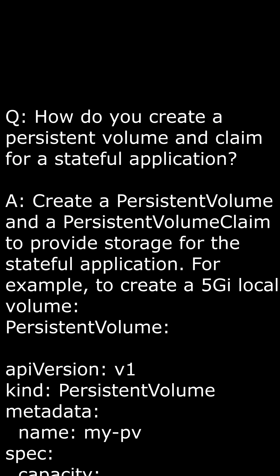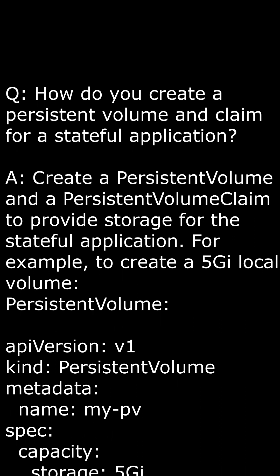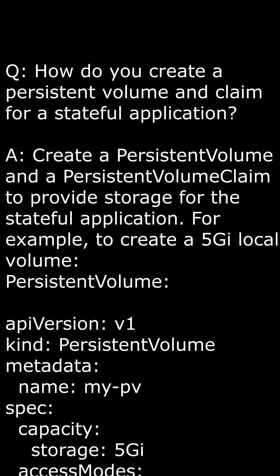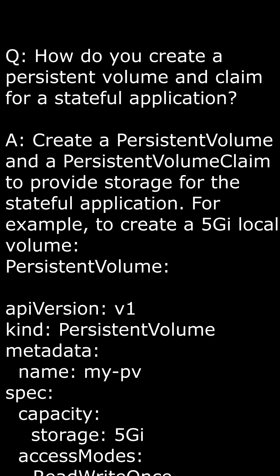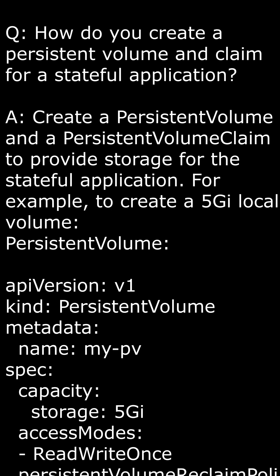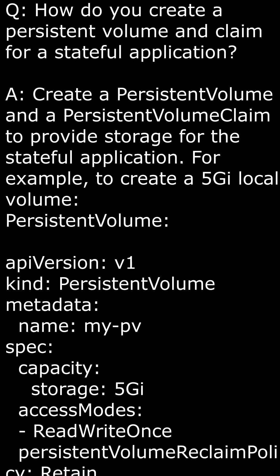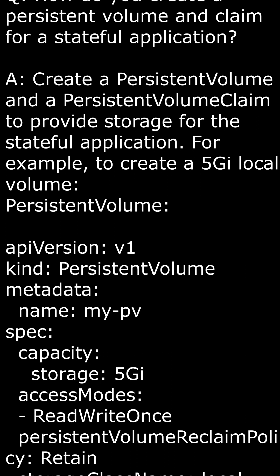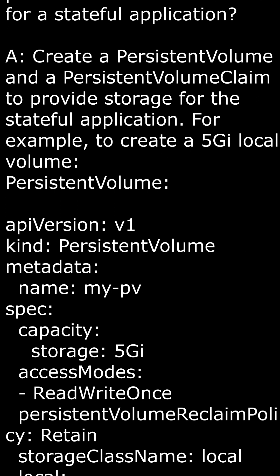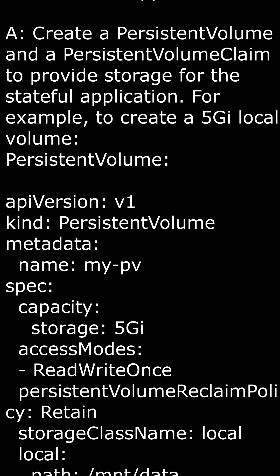Spec: this specifies the persistent volume's desired state, such as its capacity and access modes. Capacity: this specifies the storage capacity of the persistent volume — in this case, it's set to 5 gigabytes. Access modes: this specifies the access modes — in this case, it's set to ReadWriteOnce, which means it can be mounted as read-write by a single node.